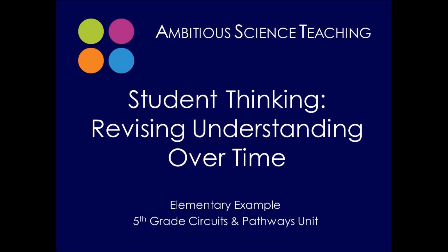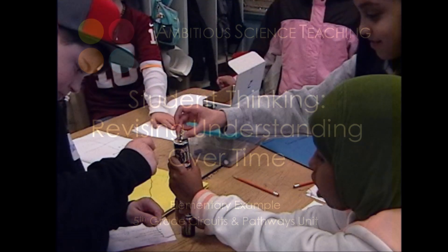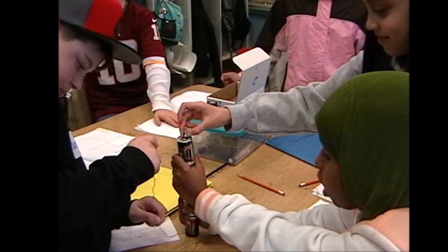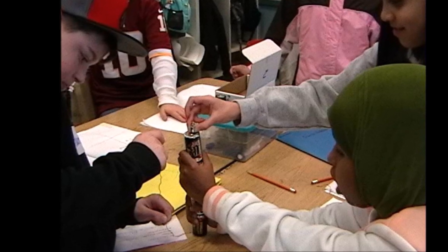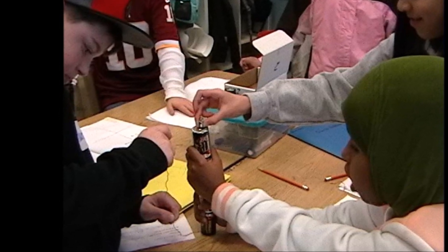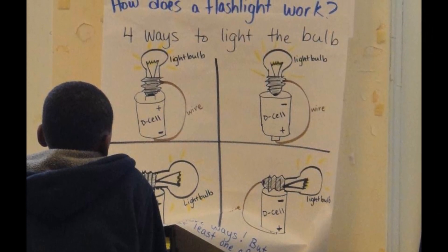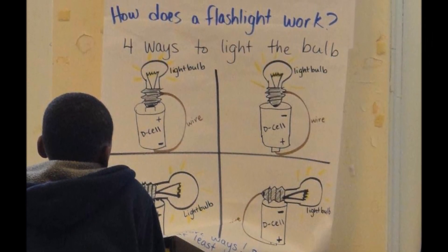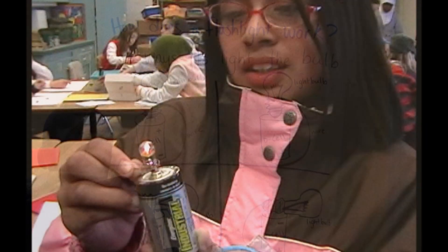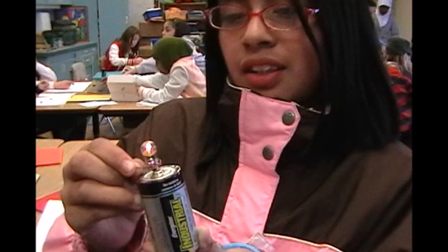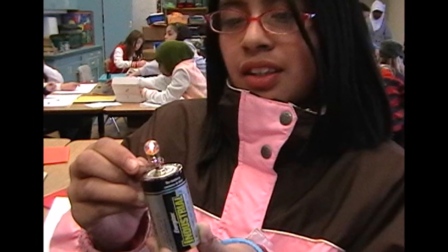This video shows how an elementary student revises his thinking during a fifth grade science unit about circuits. Students initially recorded their thinking about how and why a flashlight would stop working if it were accidentally left on. One student explains his initial thinking about what would cause the light bulb to stop working. Listen to what kinds of experiences he draws on to make sense of why a bulb would stop working.